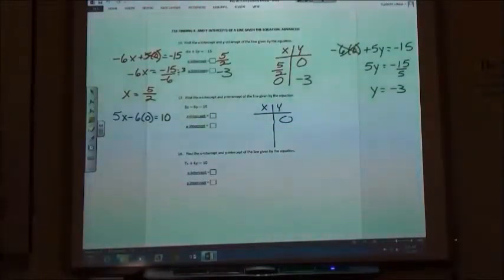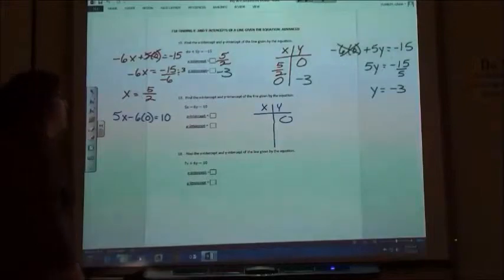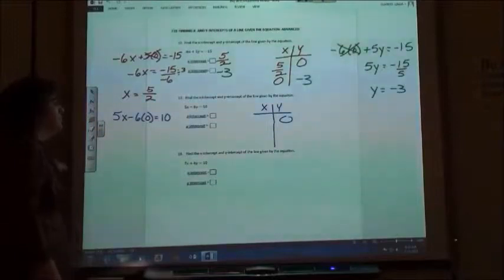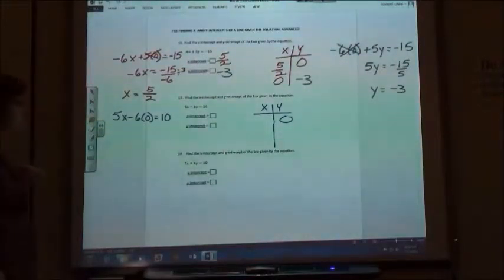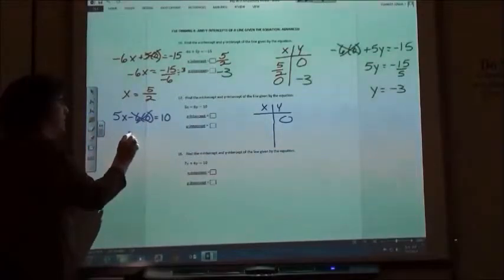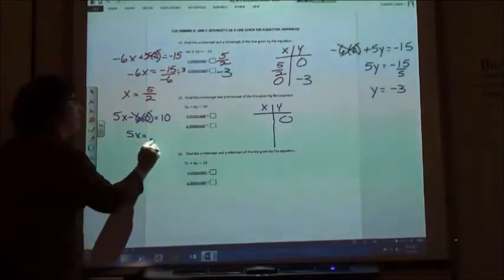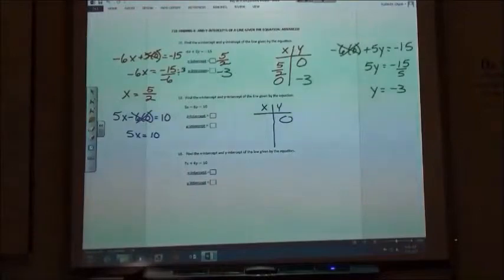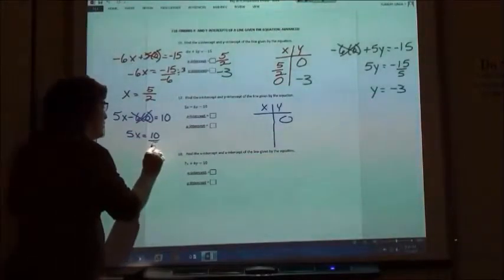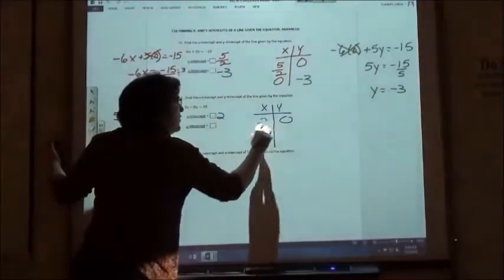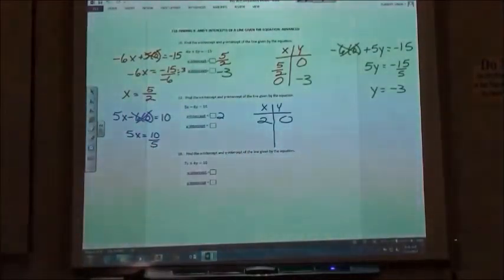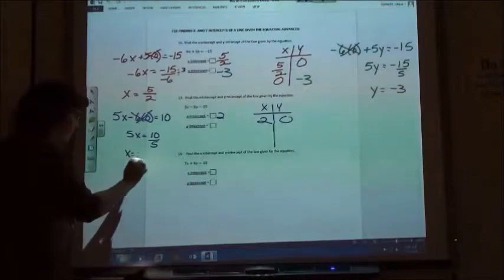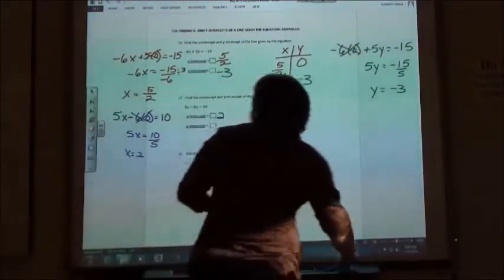So if I do that, what happens? Okay, 5x equals 10. So 6 and 0 cancel. So you're going to go 5x minus, that's going to be gone, right? Because it's nothing. 5x minus 0, so 5x equals 10. And then I'm going to divide, and so my answer is 2. So I found my x-intercept, x equals 2. So they just put a 2 in that box.